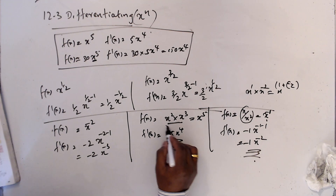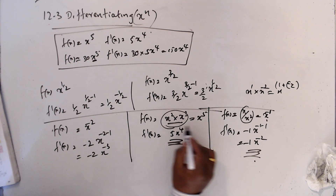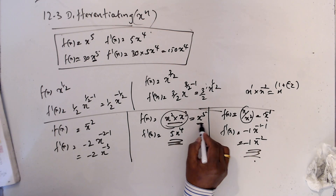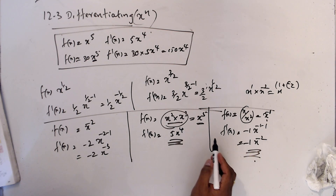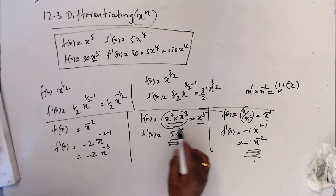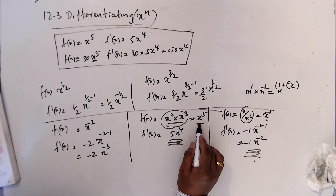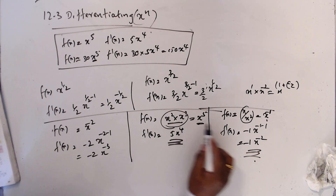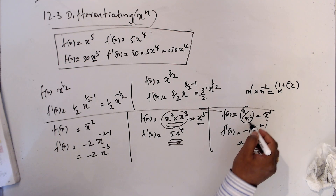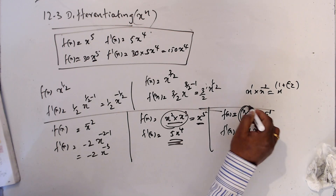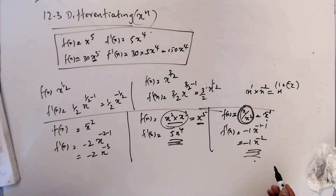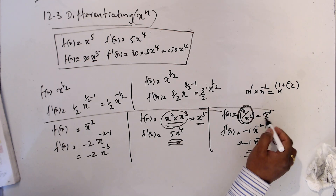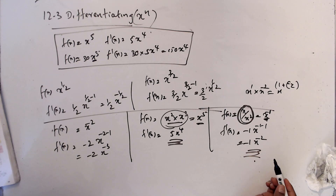If we have a different form like that, bring it to one standard form first. Simplify it up to that level — whether it's a multiplication or a division — bring it to one form, then differentiate.